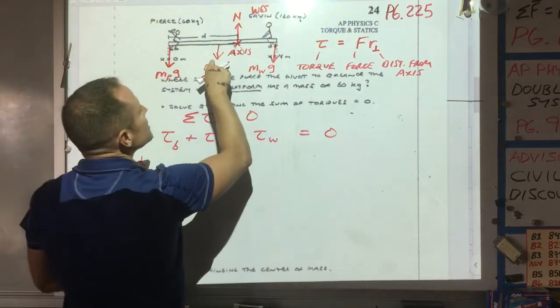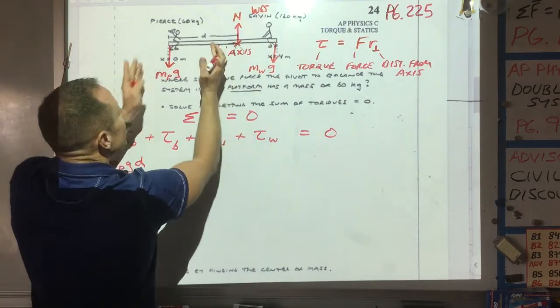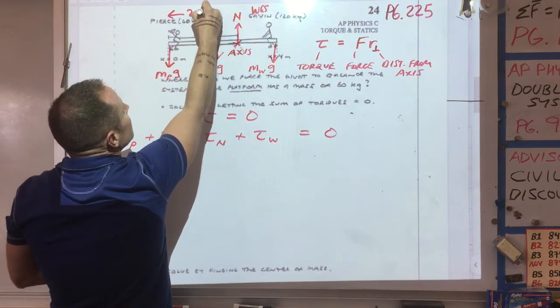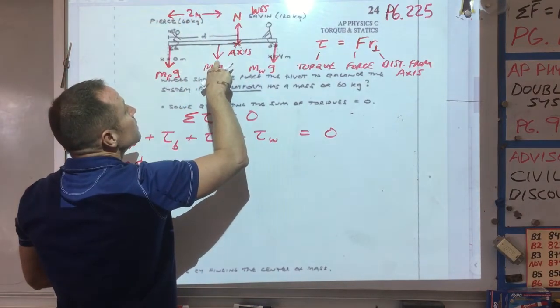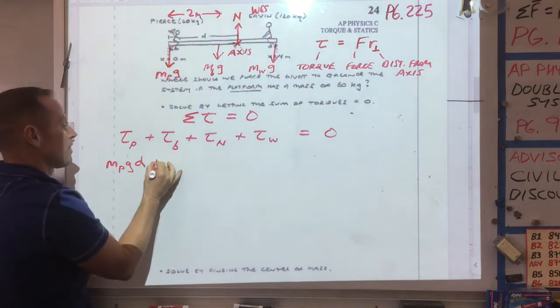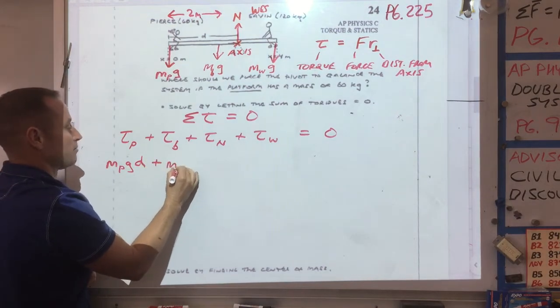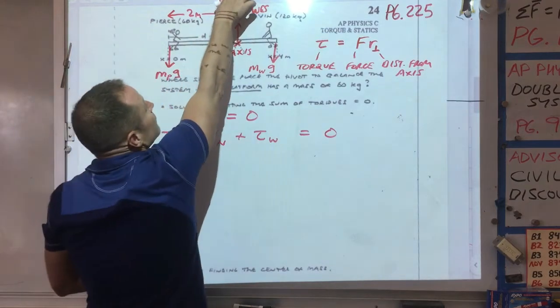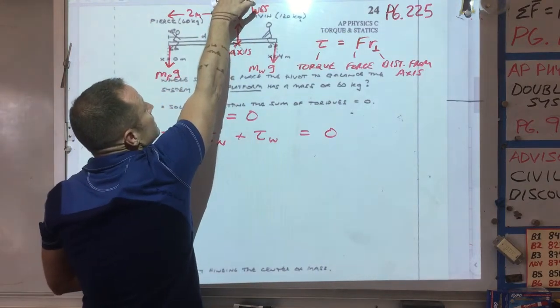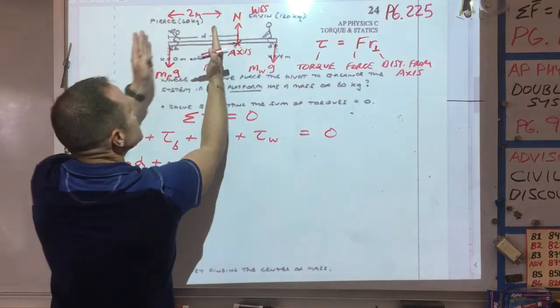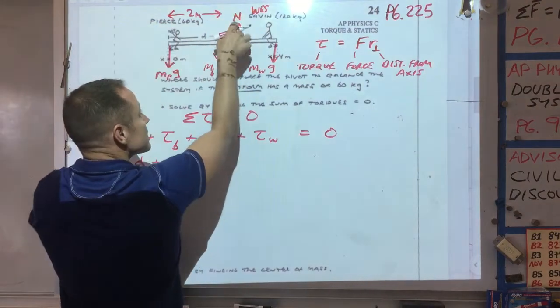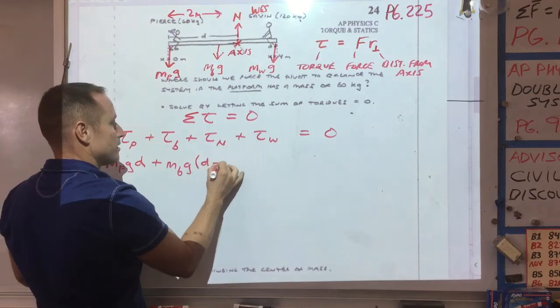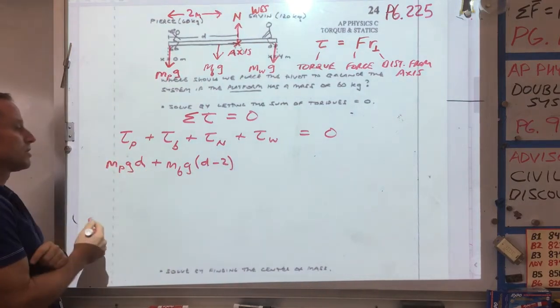The board is located here. This distance here is two meters to this force. So we can say that force is mass of the board times G. And then the effective distance is only d minus 2, because this is 2 and this is d. So this little gap here is going to be d minus 2.